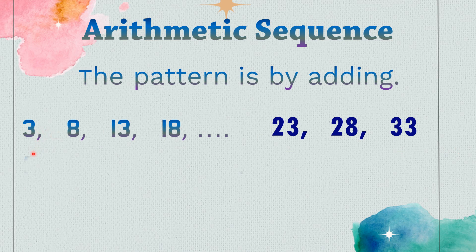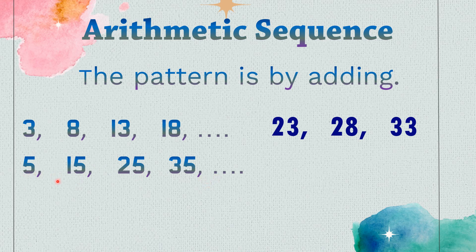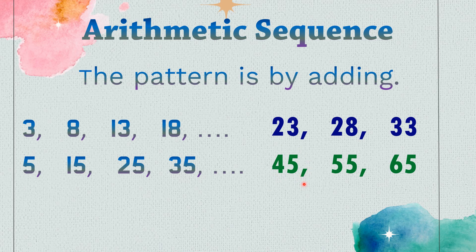Another example: 5, 15, 25, and 35. The pattern of this arithmetic sequence is adding 10. So: 5 plus 10 is 15, plus 10 is 25, plus 10 is 35. The next three terms after 35 are: 35 plus 10 is 45, plus 10 is 55, plus 10 is 65.